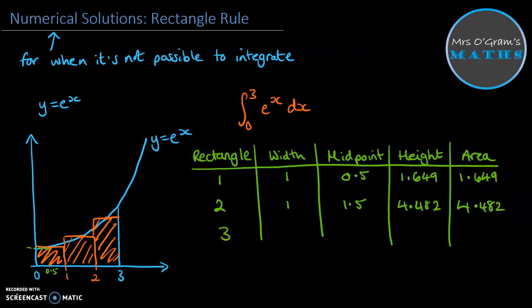Right, rectangle number 3 also has a width of 1. The midpoint here is 2.5. E to the 2.5 is 12.182, so our height multiplied by the width is still 12.182. So we've got our three different rectangles. Now we total them up and we get 18.313. So our area under that curve is approximately 18.313 units squared.